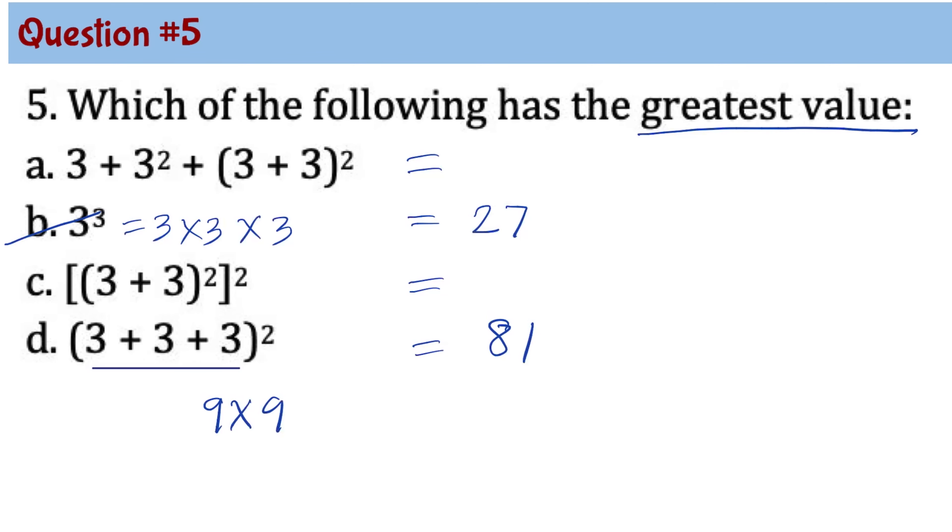For letter A, we can simplify 3 square as 9. 3 plus 3 is 6, and 6 square is 36. Now we need to add 3 plus 9, that's 12. 12 plus 36 is 48. Again, D is more than 48, so we can eliminate choice A. And now we have 50% chance of getting the right answer, either C or D.